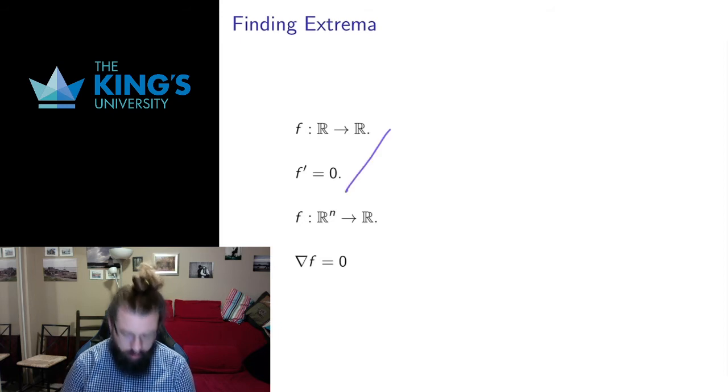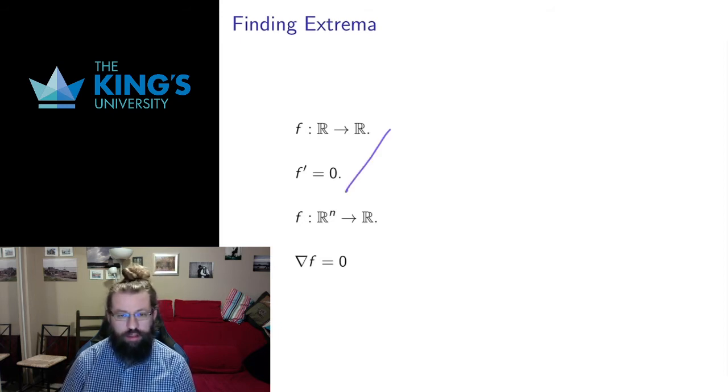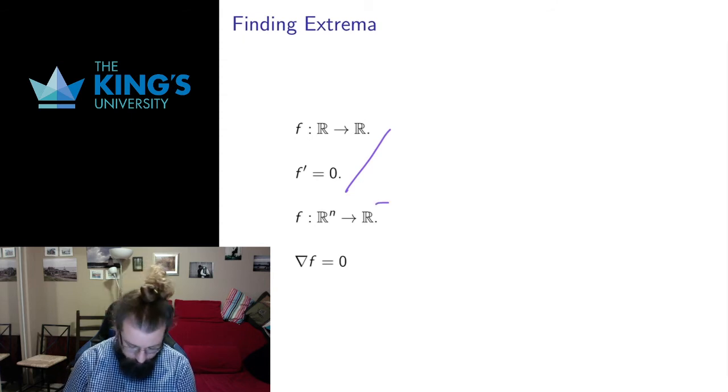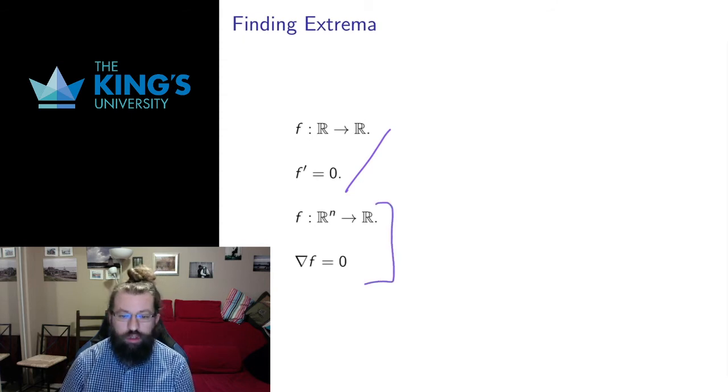If we have a single variable function, extrema are indicated by the fact that the derivative is equal to zero. But our derivative is now a new thing. For multivariable functions, the extrema are indicated by all derivatives equal to zero, all partials. And the best way to succinctly say that is to say that the gradient is zero.